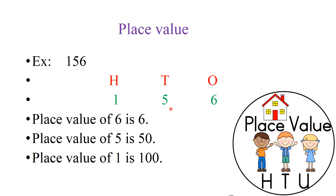The digits are 1, 5, 6. Now, 6 is in the 1's place — its place value is 6 ones, which is 6. Now, 5 is in the 10's place. Can you guess the place value of 5? It is in the 10's place, so the place value will be 5 tens, that is 50.